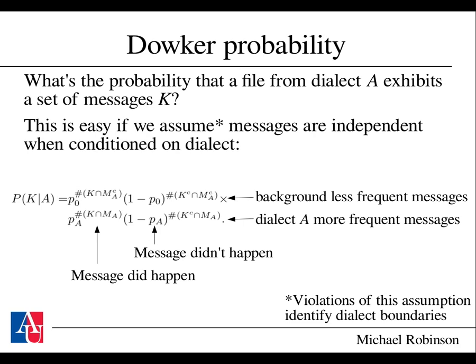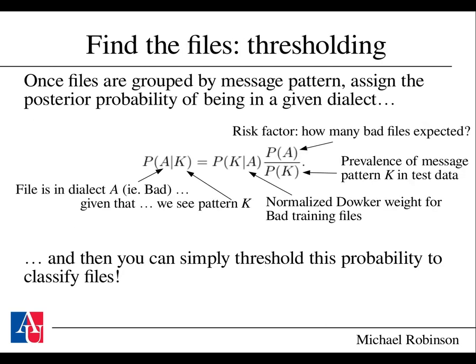Once you have this in hand, you can ask: what is the probability that a file from a given dialect exhibits a set of messages as a behavior? This is straightforward statistically if we assume that messages are independent once we've conditioned on dialect. Unlike many statistical assumptions that are not quite benign, when this assumption is violated, it actually helps you identify dialect boundaries. So if you don't know the dialects from the outset, you can use violations of this idea to identify where the dialects actually are. The formula on the screen is nothing other than Bayes' rule — it's not quite deep.